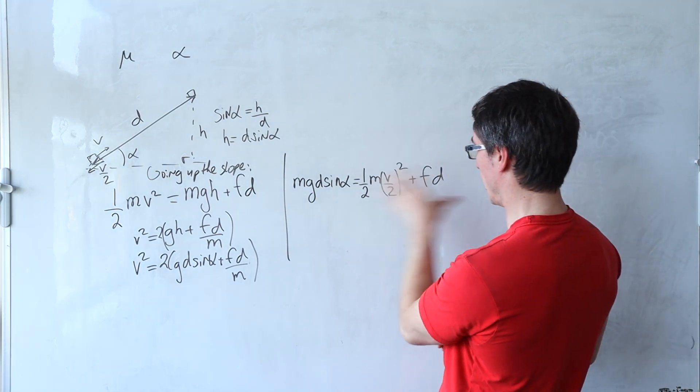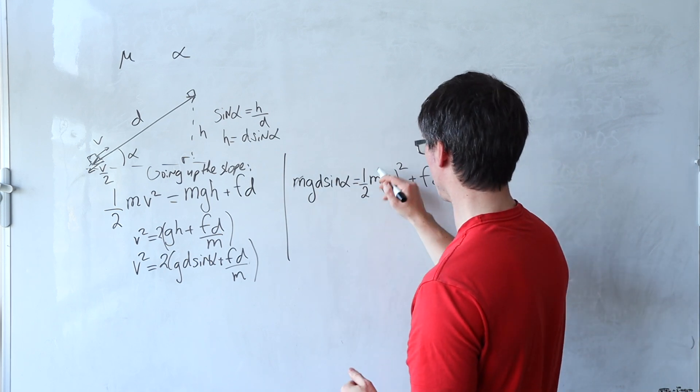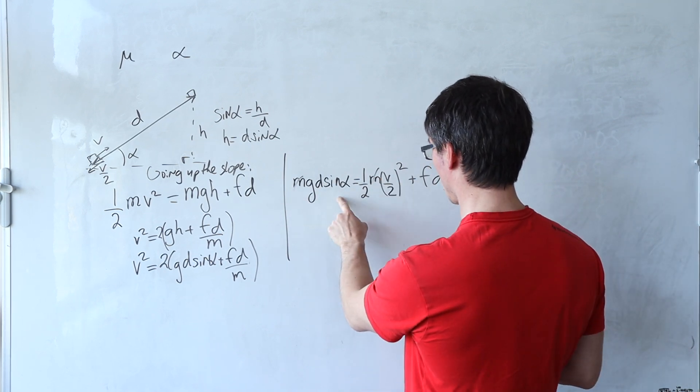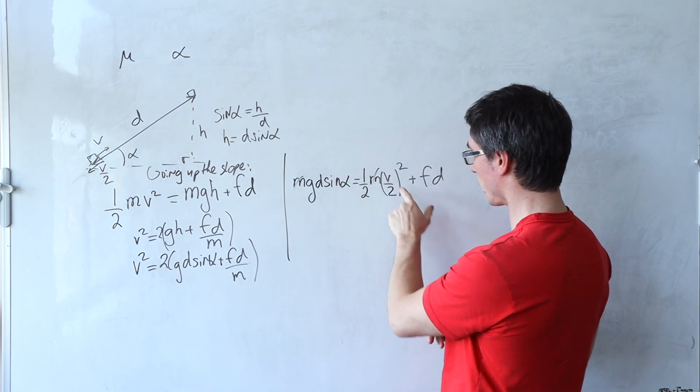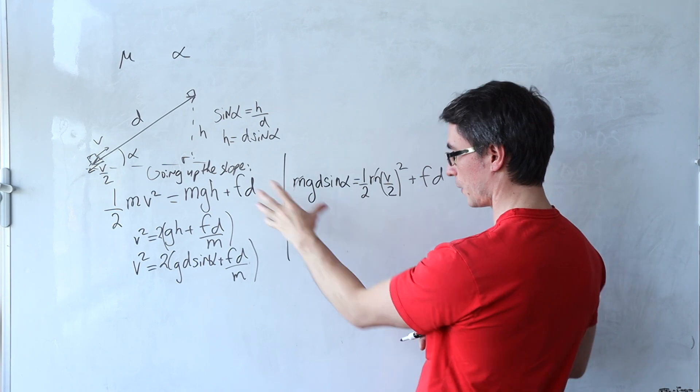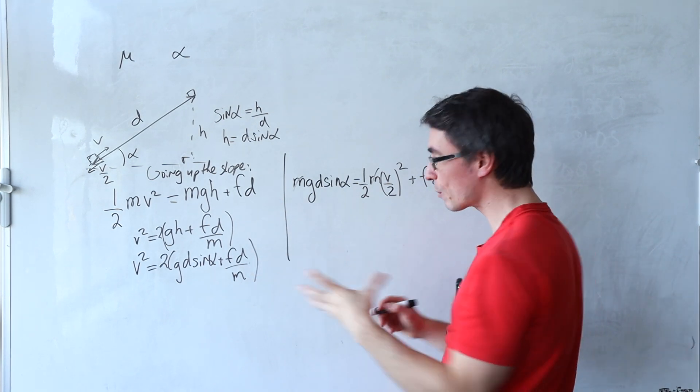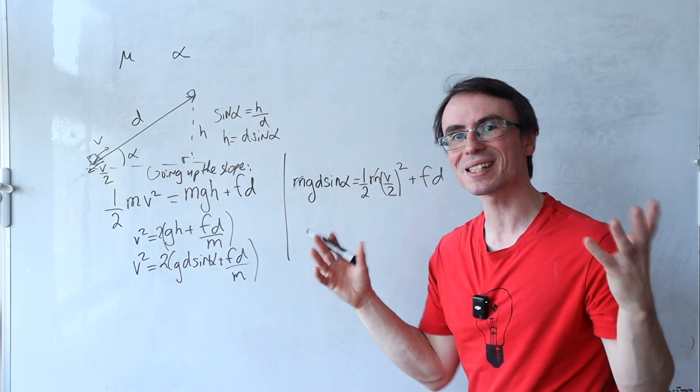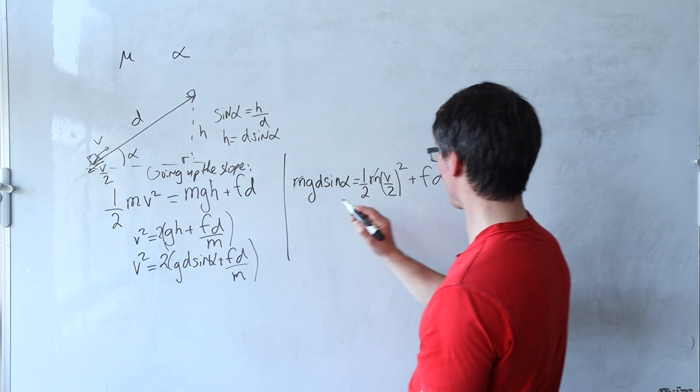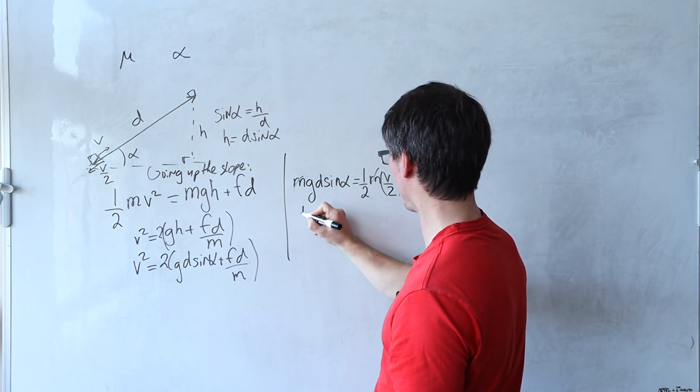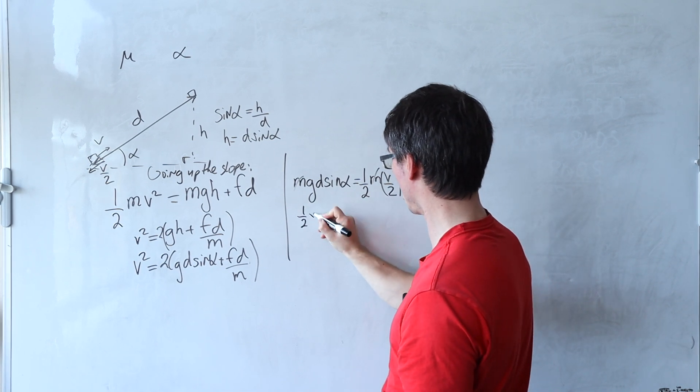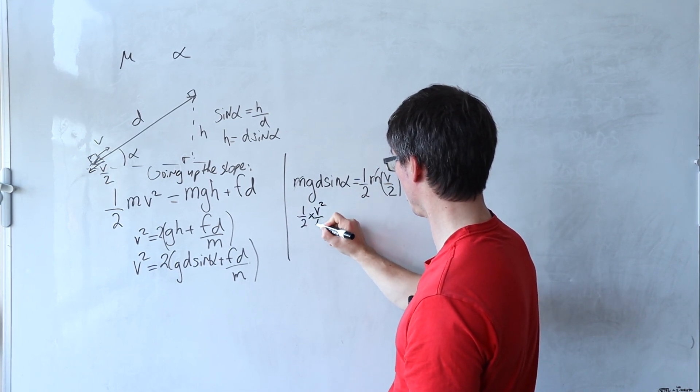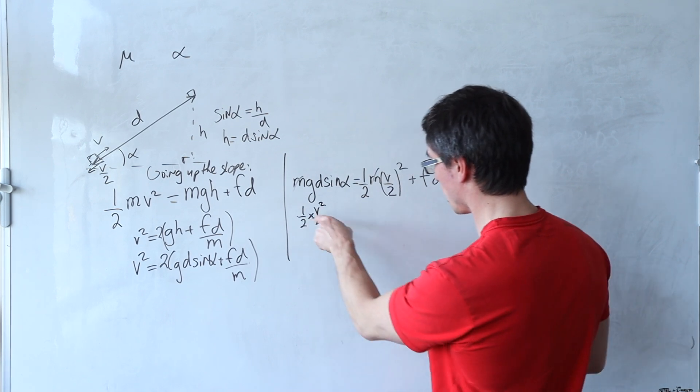Okay, now let's simplify this and let's see what we're going to get. We're going to get g d sine alpha. My plan of action is probably to find an equation for v squared and then set those two equations equal to one another and kind of see where that gets us. So I'm going to go a half times v over 2 which is going to be a half times v over 2 over 4 which is going to give me 1 over 8.